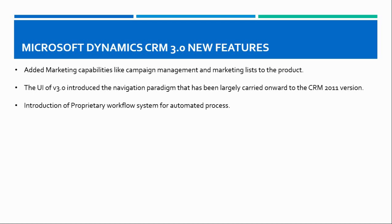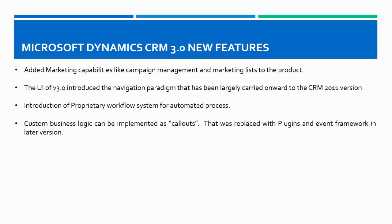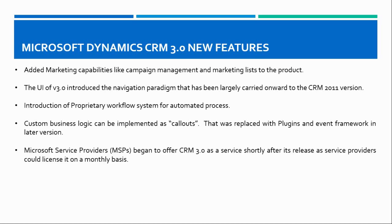A proprietary workflow system was added for automating business processes. It was now possible to implement custom business logic with the help of callouts, which were later replaced by plugins and the event framework in subsequent versions — one of the most powerful features to this day. This is the origin of plugins and the event framework that Dynamics 365 developers use today.